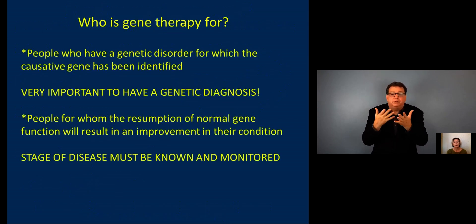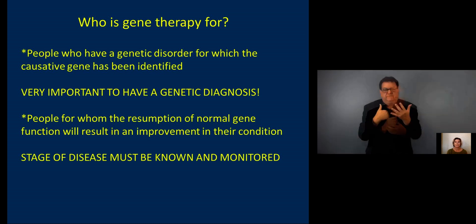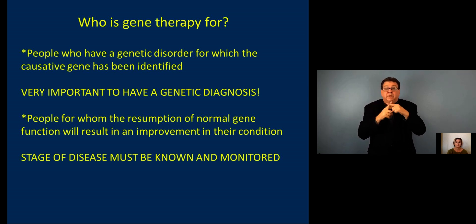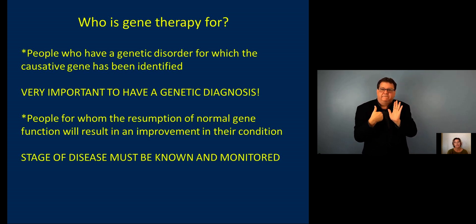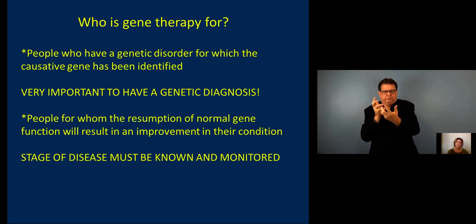Moving on — who is gene therapy for? There are a couple of criteria that are important for considering a hypothetical gene therapy. First, targeted therapy for a specific gene is only going to work in a person who has a disorder in which that particular gene has been identified. Now in a complex disorder like Usher syndrome that can be caused by mutations in many different genes, it's really important to have a genetic diagnosis to know which gene is affected in your particular case and which gene therapy might be appropriate for you.